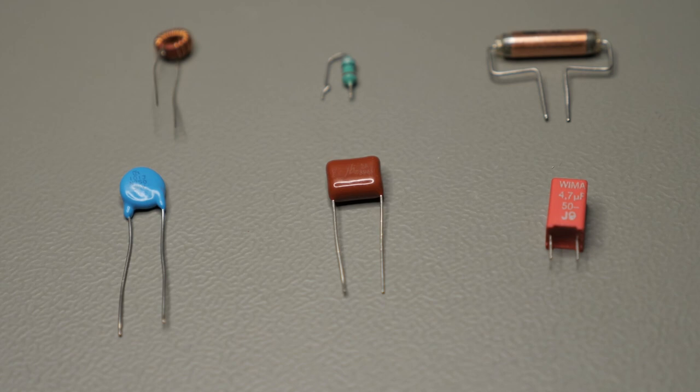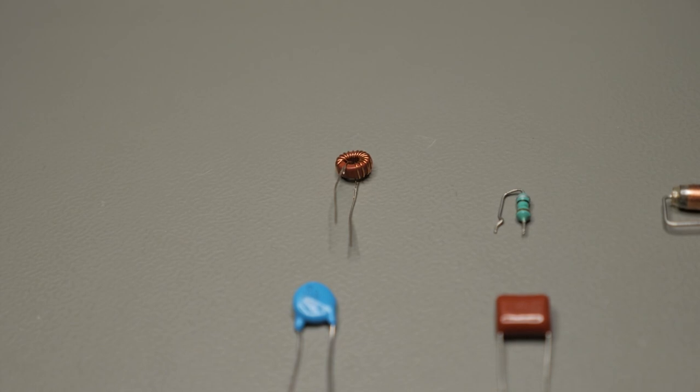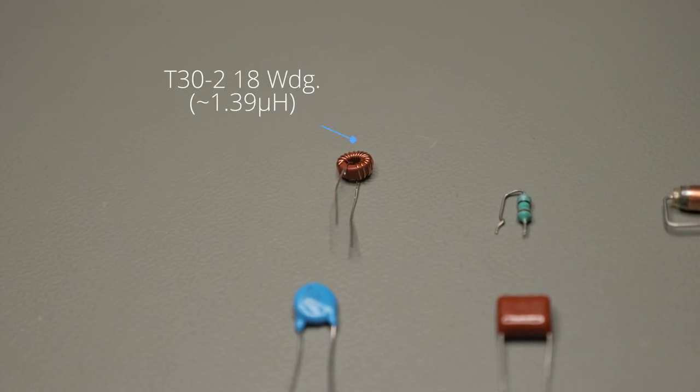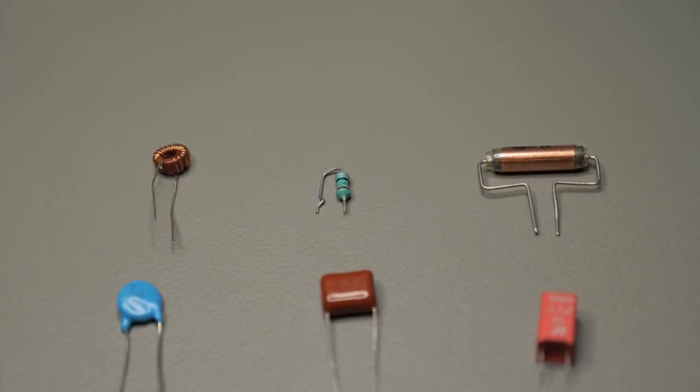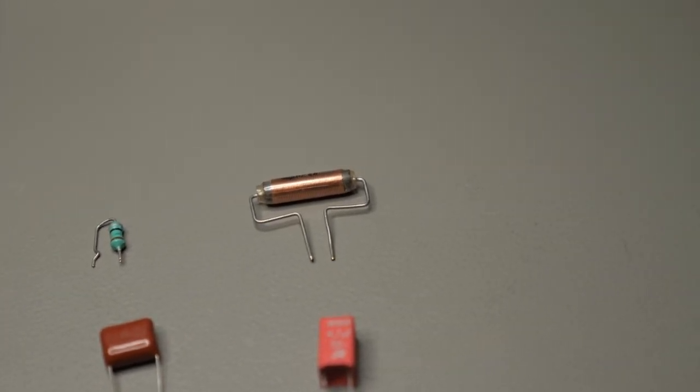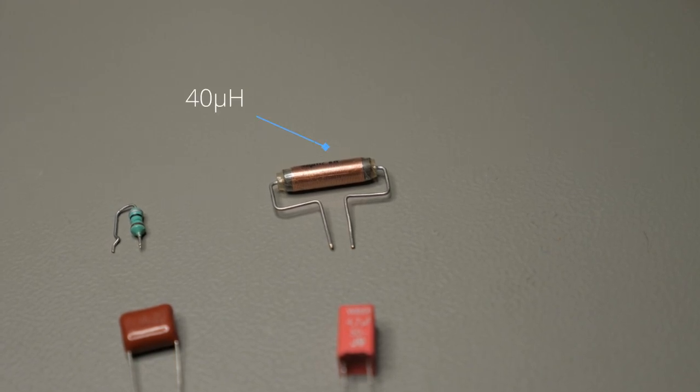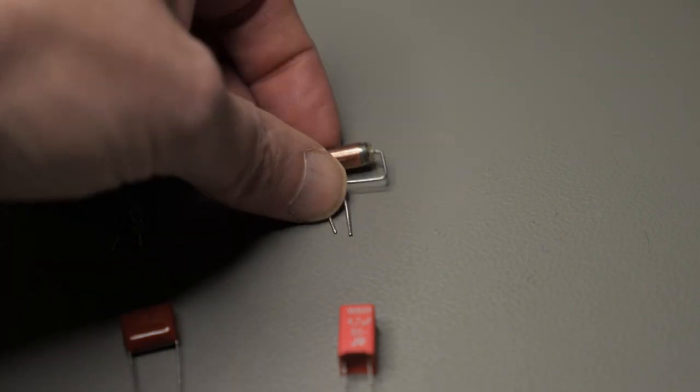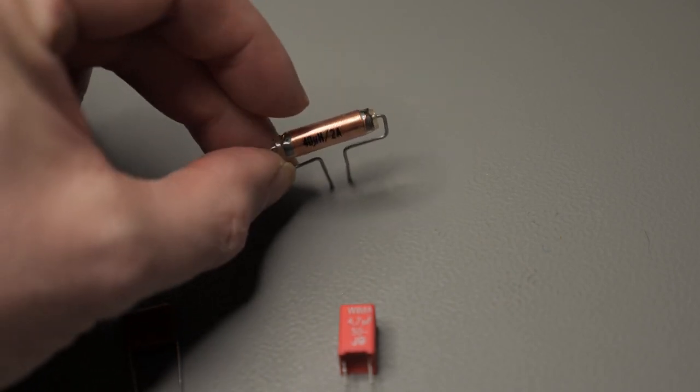Okay so here are the capacitors and inductors we will have a look at. On the top left side I have a self-wound toroid, 18 windings on a T30-2 core. Then in the middle here the green bit which looks like a resistor to the untrained eye. That is a 15 microhenry inductor and here on the right side we have a 40 microhenry inductor on a ferrite core. It just has some plastic shrink around it. You can see the wires, you can see the ferrite.